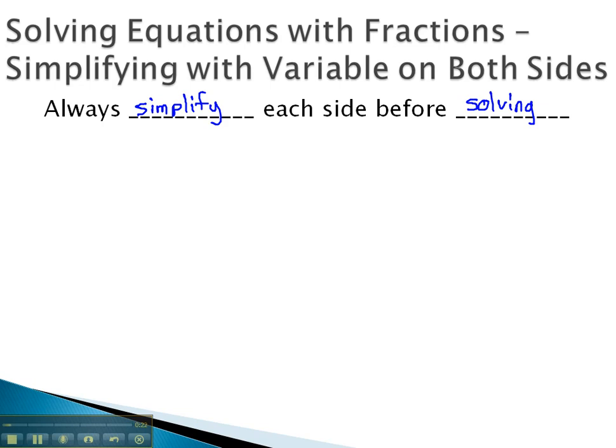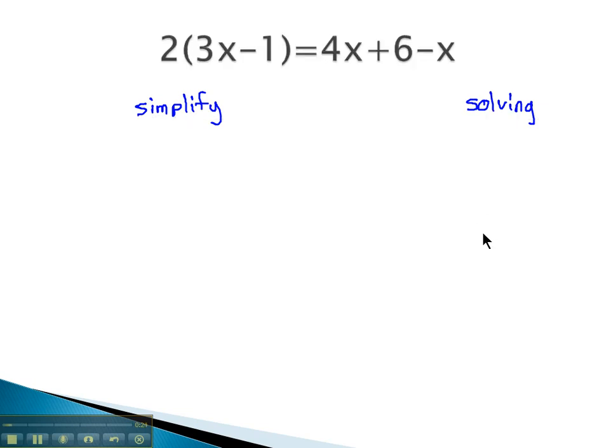Let's take a look at some examples where we do just that. In this problem, if we look at balancing on the equal sign, we see there is some simplifying we can do on both the left and right side. On the left side, we see a 2 in front of parentheses, which means we must distribute it through the parentheses.